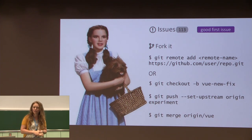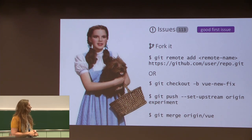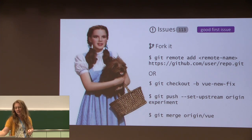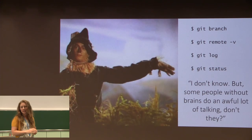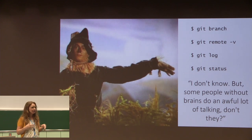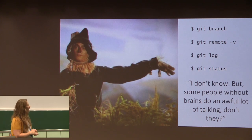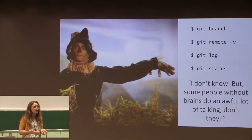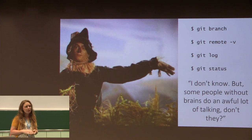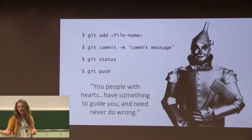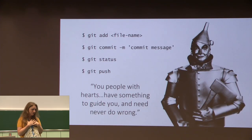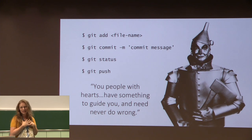You have the opportunity to have your own branch, or you can fork it if you don't have the permissions. Get everything on your machine so you can start working. And then you need to have some idea about it — these are a collection of the commands that I use to find out more information about what I'm working on.